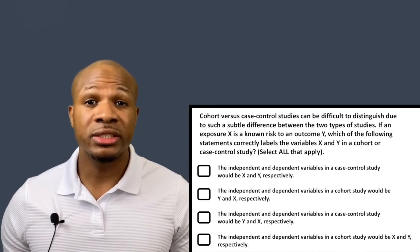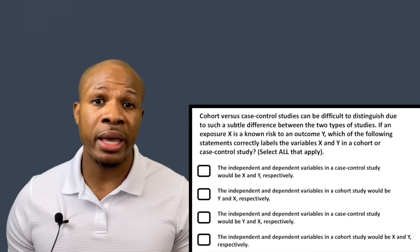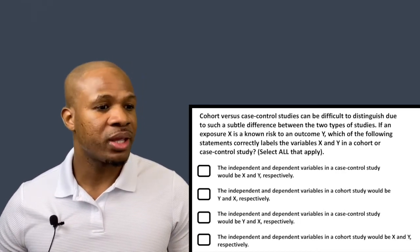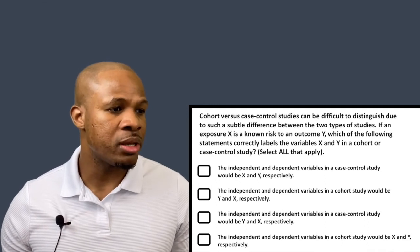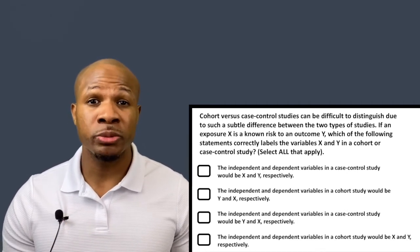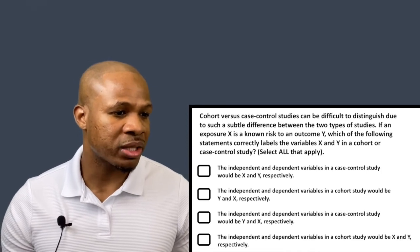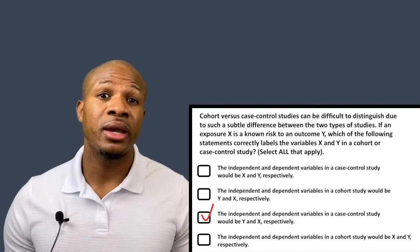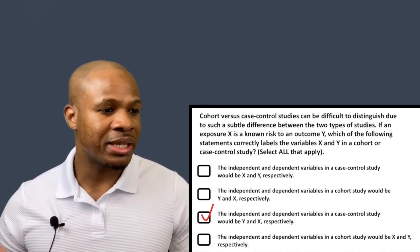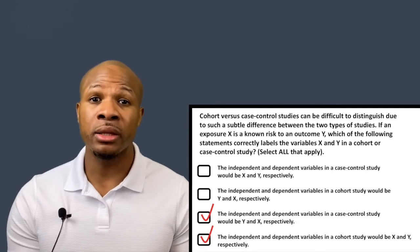Looking at the answer choices: Answer choice A says independent and dependent variables in a case-control study would be X and Y respectively — that's wrong, because in a case-control study the outcome Y is the independent variable. Answer choice B says in a cohort study they would be Y and X respectively — also wrong, because in a cohort study the exposure is the independent variable. Answer choice C says in a case-control study they would be Y and X respectively — that's correct. Answer choice D says in a cohort study they would be X and Y respectively — that's also correct.